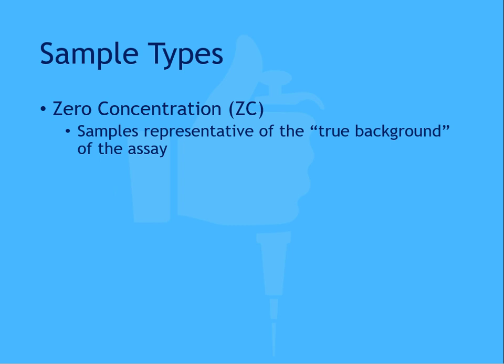Once you've created or obtained your ZC, you can determine the contribution of all reagents and buffers to the assay signal without the target antigen, or the true background of the assay. The raw values for the ZC samples should be slightly higher than the blank samples if you're running both sample types on your assay. These samples are necessary to calculate a true limit of detection for an assay, and the zero concentration serves as a benchmark for the sum of all reagents and buffers.